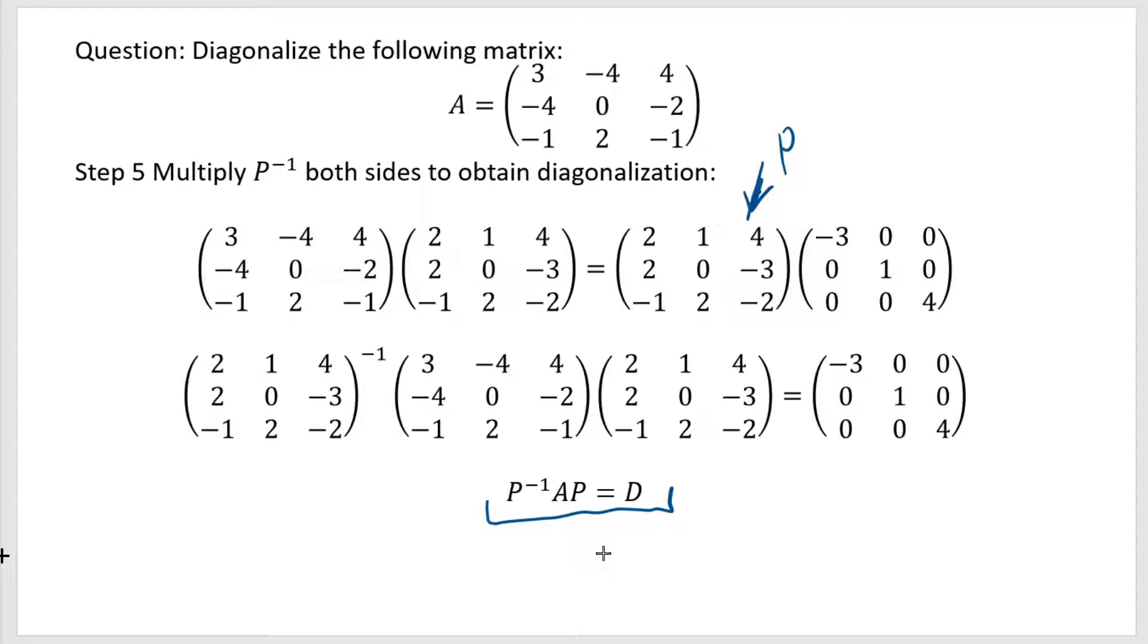Now, one more additional comment I want to make is that the diagonalization is not unique. The matrix P can be changed. The orders could change, then these values will change, right? Also, the diagonal values, that could also change. So the diagonalization is not unique, but when you actually get it, the final diagonalization will have all the eigenvalues on the diagonal. And another remark I want to make is...